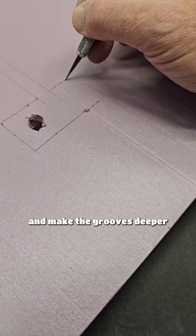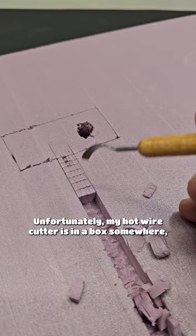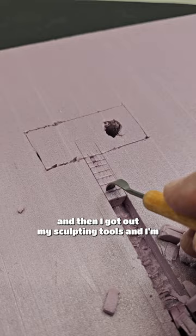Unfortunately, my hot wire cutter is in a box somewhere, so I made little squares with the X-Acto knife, and then I got out my sculpting tools, and I'm just pulling the bricks away to make the pathway.